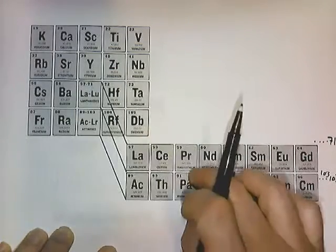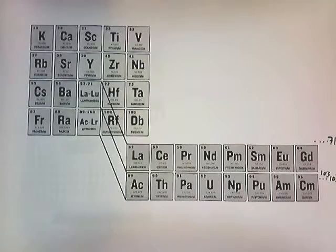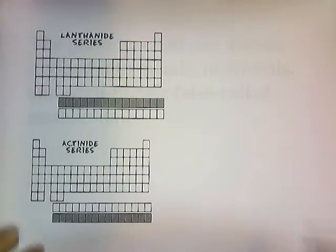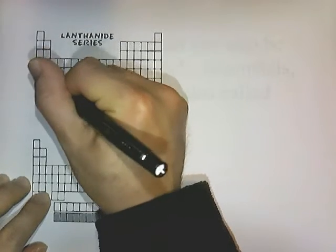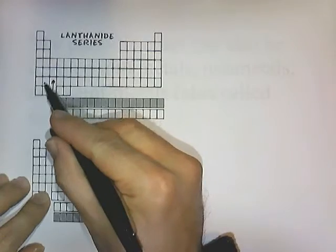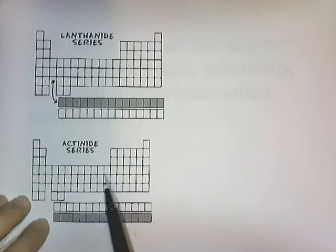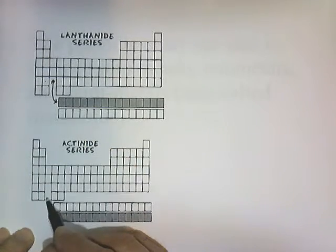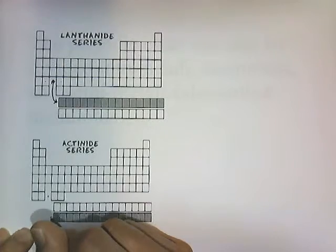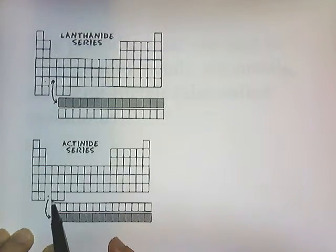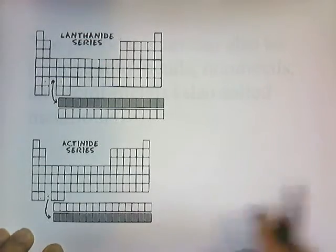These are written below the periodic chart because it makes it easier to read. This row of elements is supposed to squeeze into that little space. These elements between radium and rutherfordium are all supposed to be crammed into that section right there.